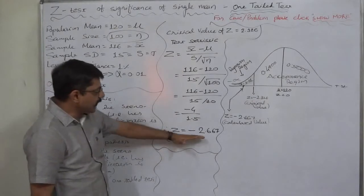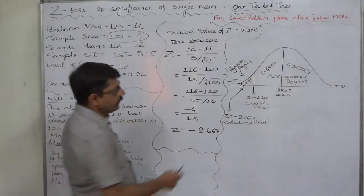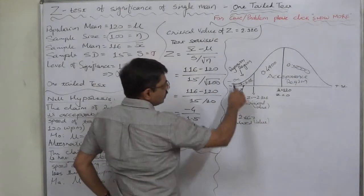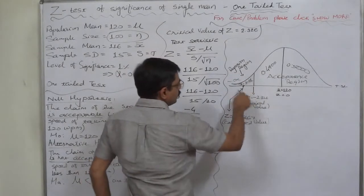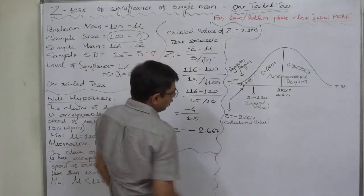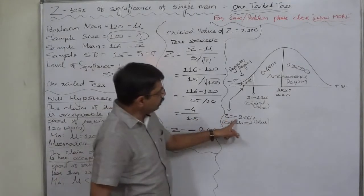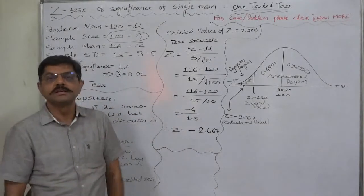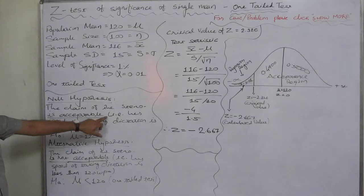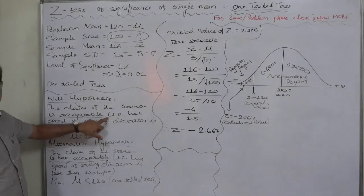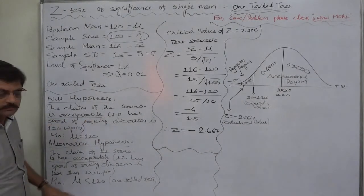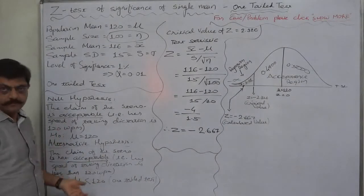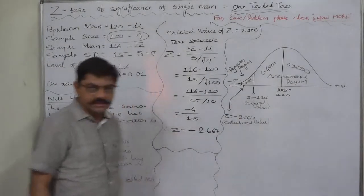What happens? We have already calculated the value of z and it is minus 2.667. Minus means further left hand side of 2.326, so here somewhere the calculated value of z falls, minus 2.667. That means the calculated value of z falls in the rejection region. That means we should reject her claim.